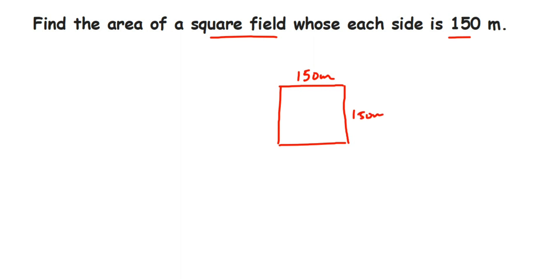What do we have to find out here? We have to find out the area. The area of a square is side times side. We know the side is 150 meters. We have to substitute in the formula and get the answer. Now let's write down what is given.